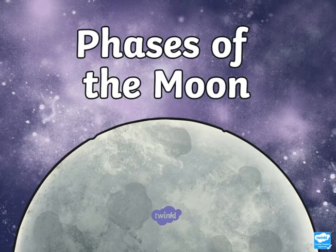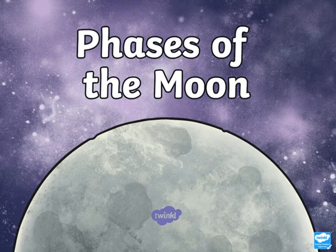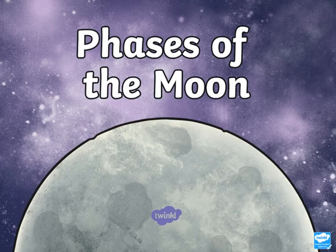Hello Grade 8, and welcome to this week's weekly breakdown. So far we have started Unit 4, which is talking about the solar system. We discussed objects in the solar system such as stars, planets, comets, meteors, and constellations, and we talked about the models of the solar system.